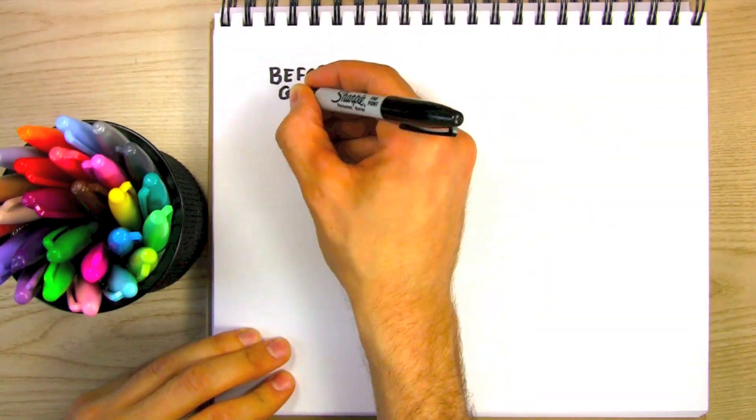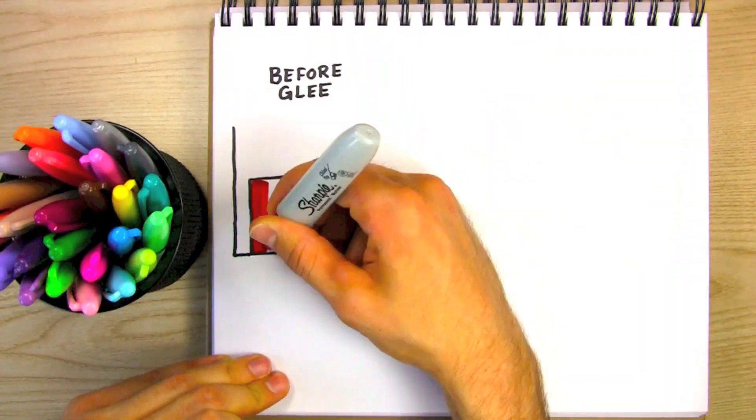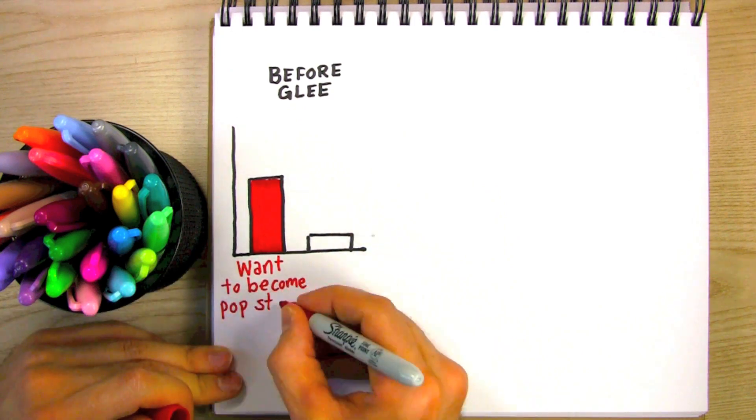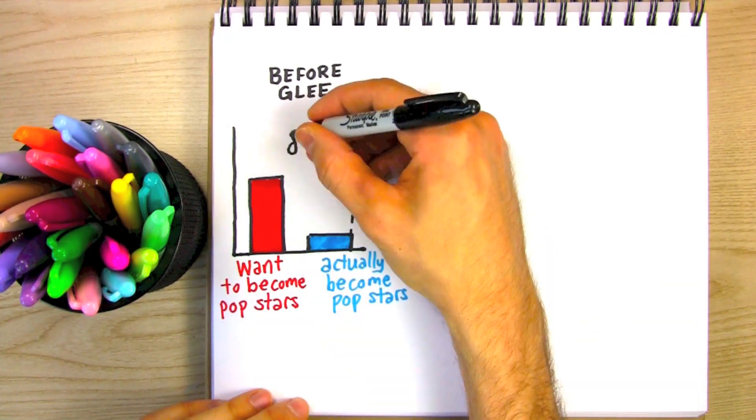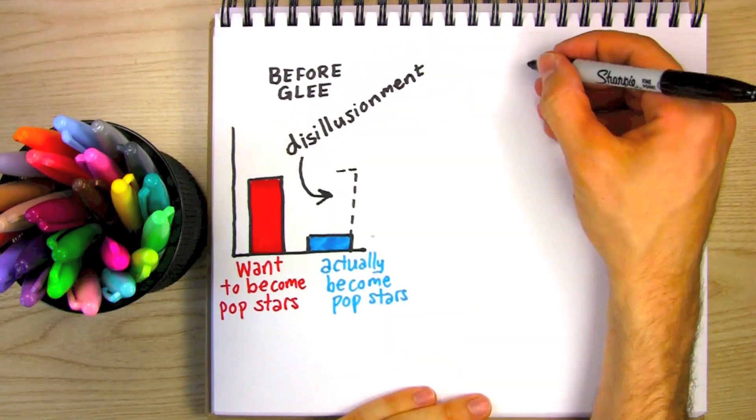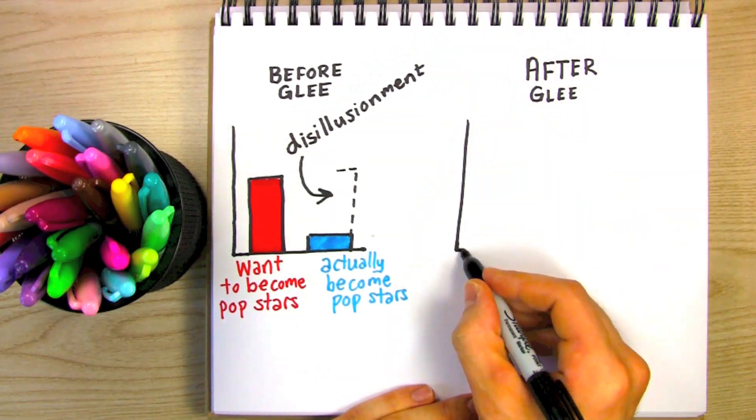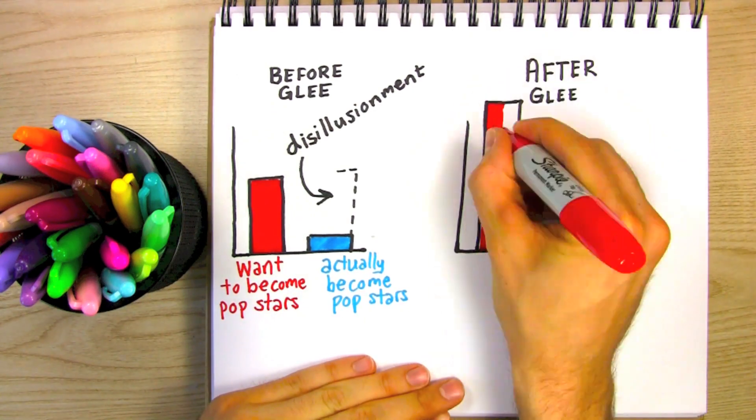Before Glee, many of America's young people already aspired to become pop stars when they grew up. But few actually achieved this goal, creating what I call the pop star disillusionment gap. But because of Glee, now even more people want to become pop stars,